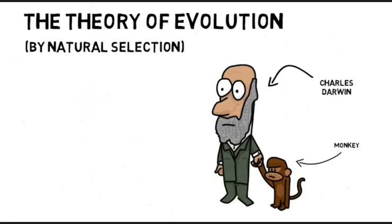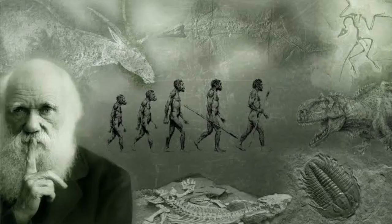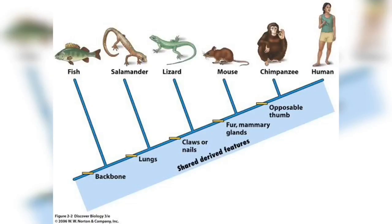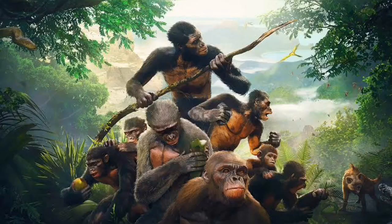Theory of Evolution by Natural Selection. In this concept, there are two main points. The first main point is that all species have a common ancestor.